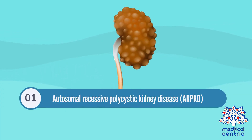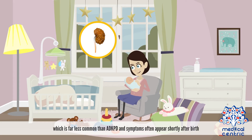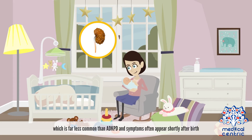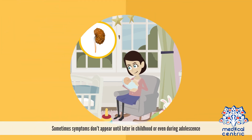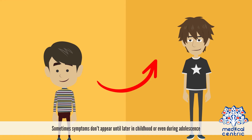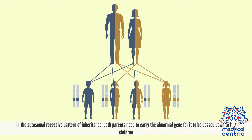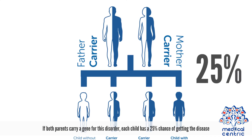Autosomal recessive polycystic kidney disease, or ARPKD, is far less common than ADPKD, and symptoms often appear shortly after birth. Sometimes symptoms don't appear until later in childhood or even during adolescence. In the autosomal recessive pattern of inheritance, both parents need to carry the abnormal gene for it to be passed down to the children. If both parents carry a gene for this disorder, each child has a 25% chance of getting the disease.